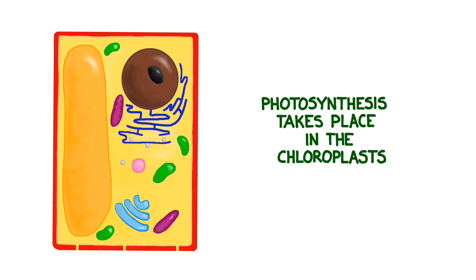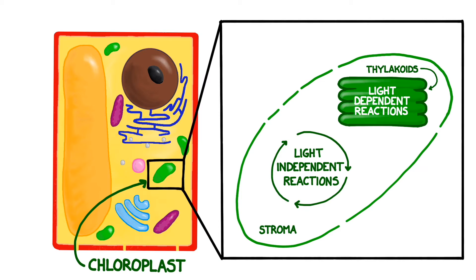In eukaryotes, photosynthesis takes place inside organelles called chloroplasts. Chloroplasts have both inner and outer compartments and a portion of photosynthesis takes place in each one. Photosynthesis is divided into two major processes, the light-dependent reactions and the light-independent reactions. The light-dependent reactions are also known as just the light reactions, and the light-independent reactions are also sometimes called the Calvin cycle.